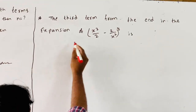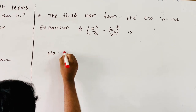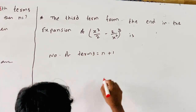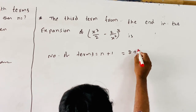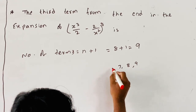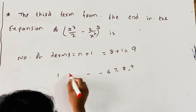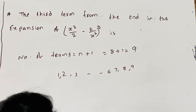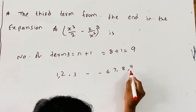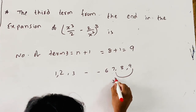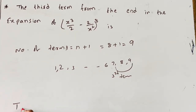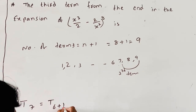In this expansion, the number of terms = n + 1 = 8 + 1 = 9. Counting from the end: the 3rd term from the end corresponds to the 7th term from the beginning (since 9 - 3 + 1 = 7). So we need T7 = T(6+1).